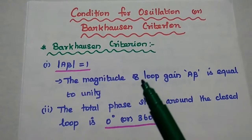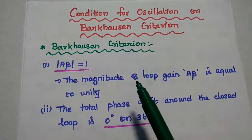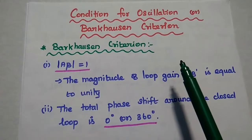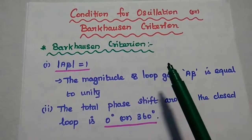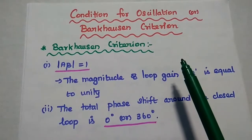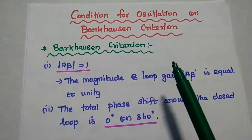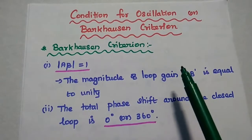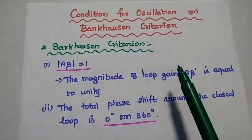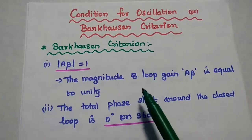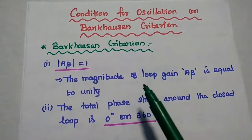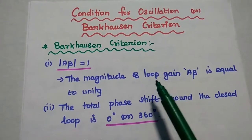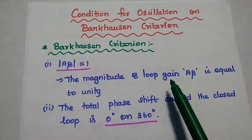Dear students, now we are going to discuss the condition for oscillation, that is also known as the Barkhausen criterion. There are two important conditions to be satisfied in oscillator circuits. Whichever electronic circuits satisfy these two conditions, those can be used as oscillators.